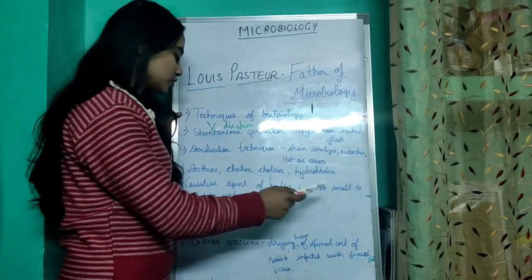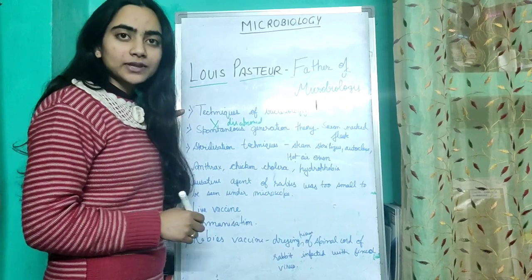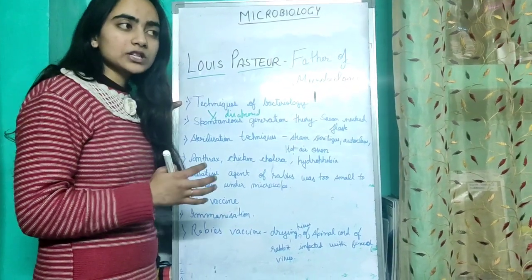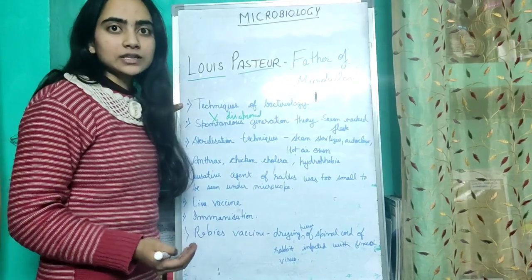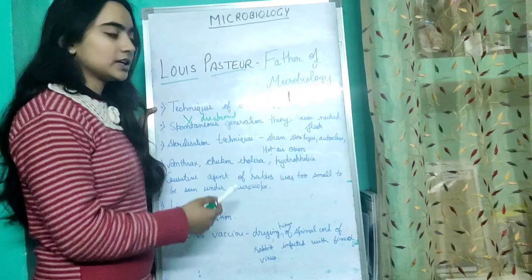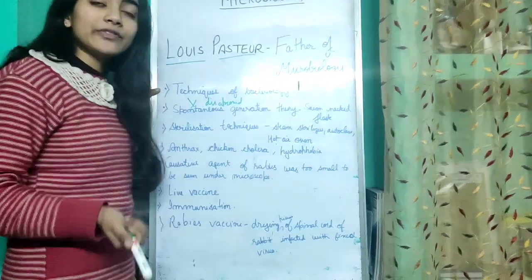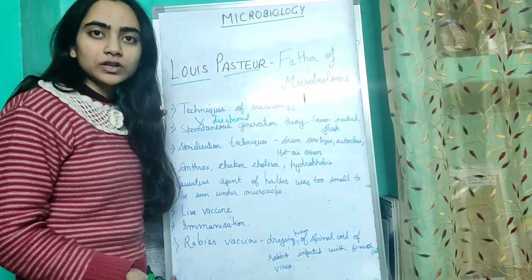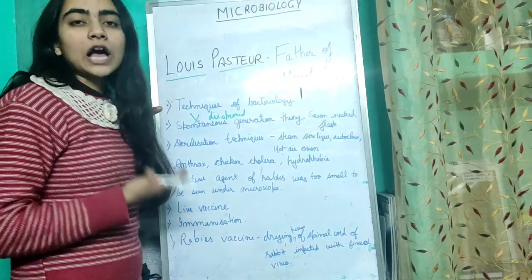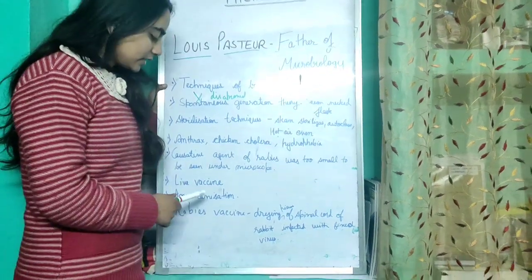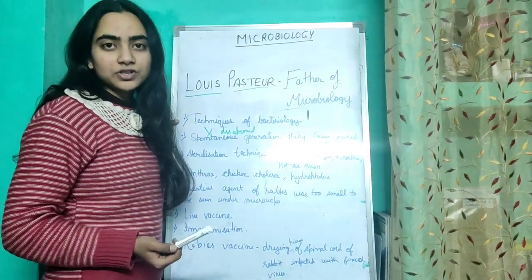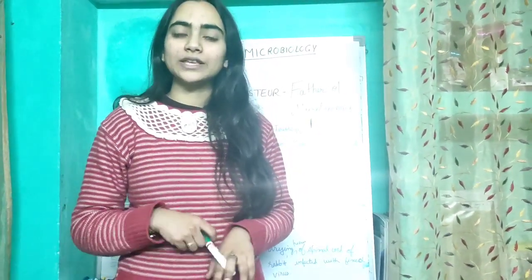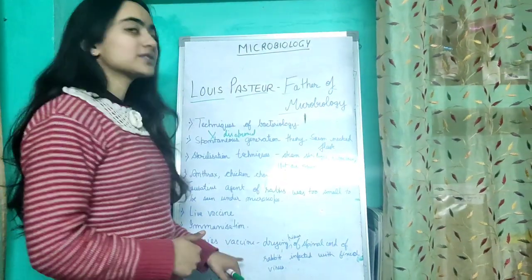The causative agent of rabies was too small to be seen under the microscope — Pasteur noted it is a causative agent we cannot see under the microscope. Next, they introduced live vaccines. After Louis Pasteur, they started studying immunization and various techniques of immunology. They also prepared the rabies vaccine — pieces of spinal cord of rabbits were dried, with fixed virus introduced, and when the spinal cord dried they obtained the vaccine.